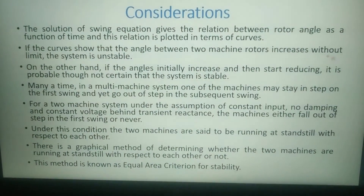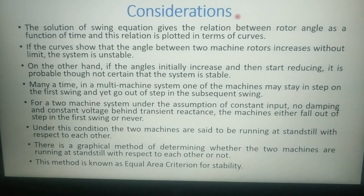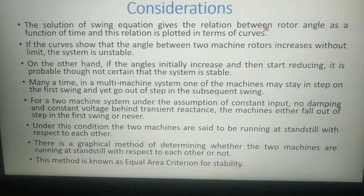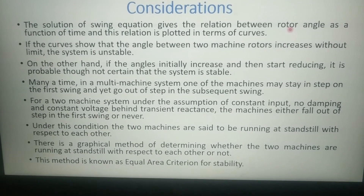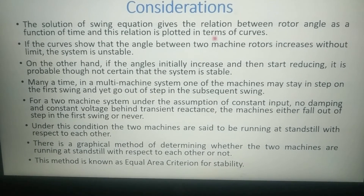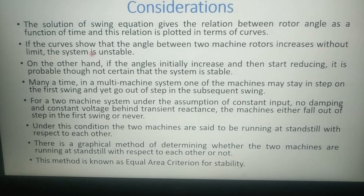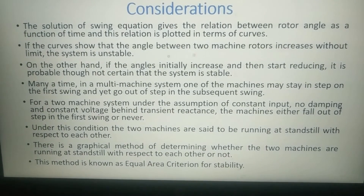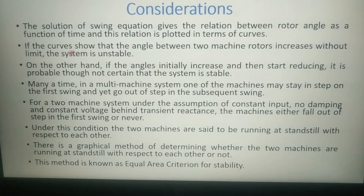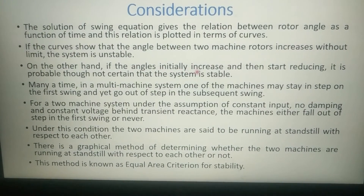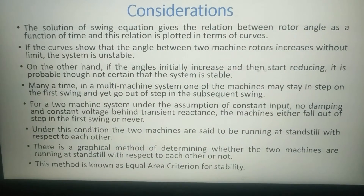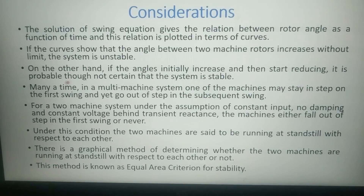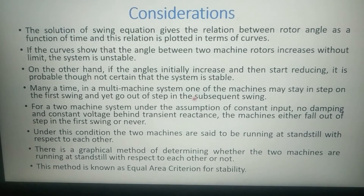From the previous five lectures studied on power system stability, we have some considerations to summarize. The solution of the swing equation gives the relation between rotor angle as a function of time, and this relation is plotted in terms of curves. If the curves show that the angle between two machine rotors increases without limit, the system is said to be unstable. If the angle initially increases and then starts reducing, it is probable though not certain that the system is stable.